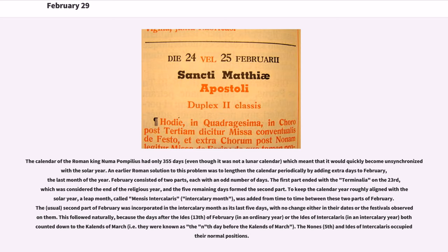To keep the calendar year roughly aligned with the solar year, a leap month called mensis intercalaris (intercalary month) was added from time to time between these two parts of February. The usual second part of February was incorporated into the intercalary month as its last five days, with no change in their dates or the festivals observed in them.